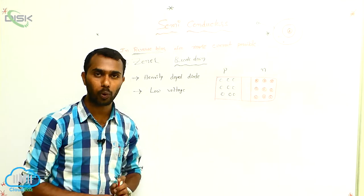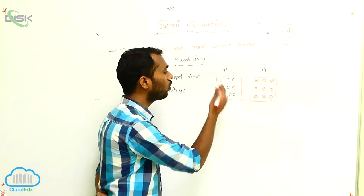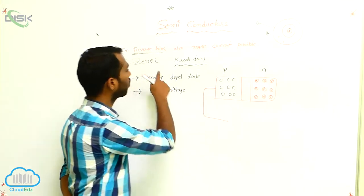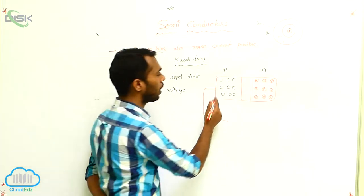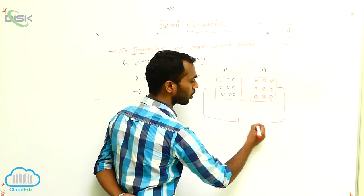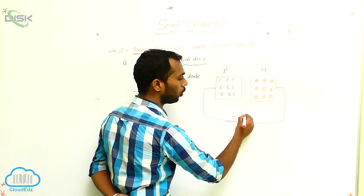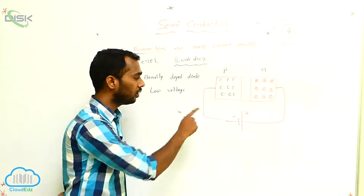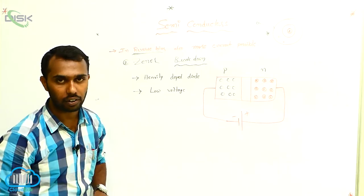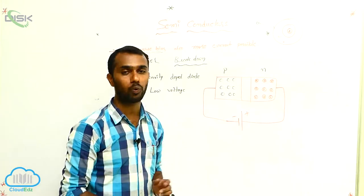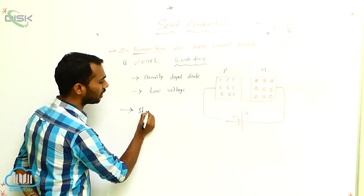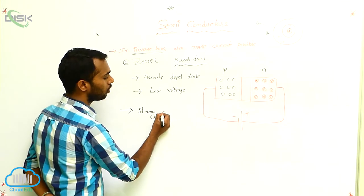If it is heavily doped, this concept is explained in reverse bias. The P-type is connected to the negative terminal of the battery and the N-type is connected to the positive terminal — that is said to be in reverse bias. Because of this heavy doping, a strong electric field exists.